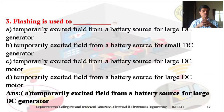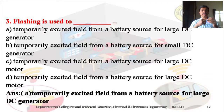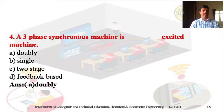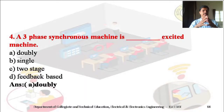Why is flashing used? Flashing is used to temporarily excite the field from a battery source for a large DC generator. For making the excitation, a three-phase synchronous machine is doubly excited, because two types of exciter systems are provided — the main exciter system and the pilot exciter system. Therefore, the synchronous machine is always a doubly excited machine.